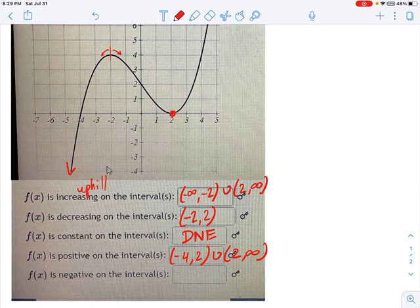And likewise, for the negative values, x equals negative infinity to x equals negative 4. Those are all negative values. And this point right here, negative 4 itself, it's not positive or negative. It's 0. It's an intercept. So we do not include that in any positive-negative discussion.